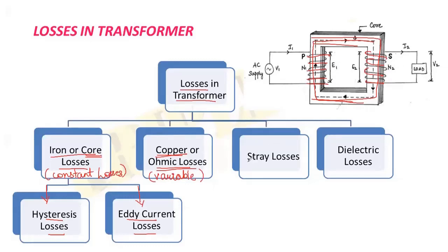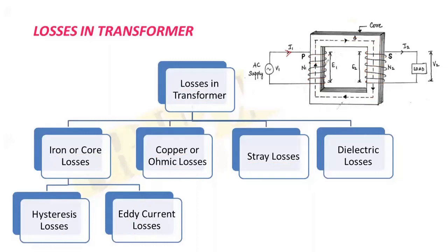There is another loss called stray losses. Stray losses arise due to leakage flux. When current flows in the primary and secondary winding, the flux produced should flow in the magnetic path, but sometimes flux is produced that does not flow in the provided magnetic path — instead it leaks out. This leakage flux interacts with all the different metallic parts of the transformer, like the tank, producing a small amount of eddy current, resulting in heating of the transformer. The losses produced due to this are called stray losses.